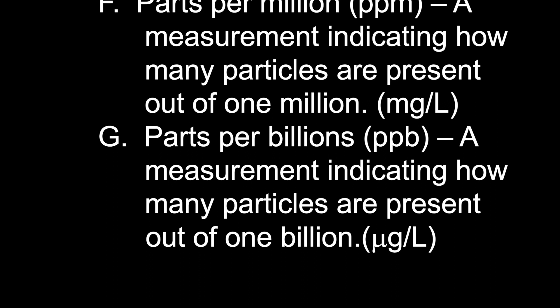In PPB, out of a billion particles dissolved in water, you're counting how many of those are the substance in question. There's also a device called a micropipetter — a mechanical micropipette — which can deliver solutions in concentrations of micrograms per liter, or parts per billion. There's even parts per trillion (PPT), not to be confused with the abbreviation for precipitant.